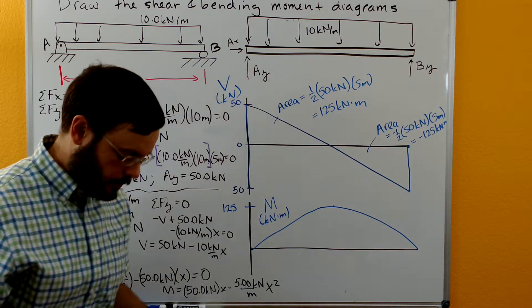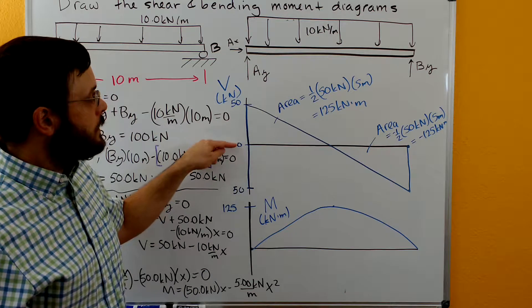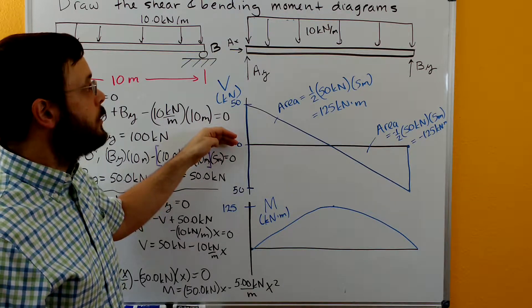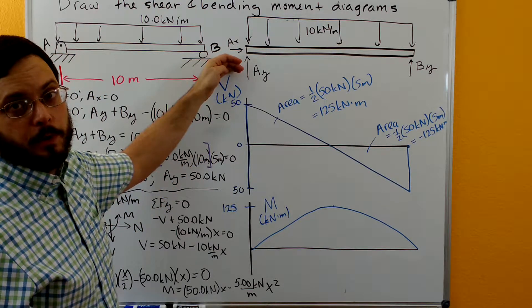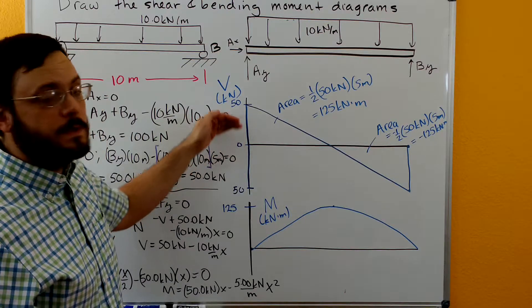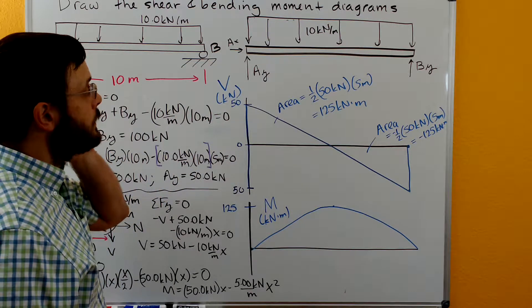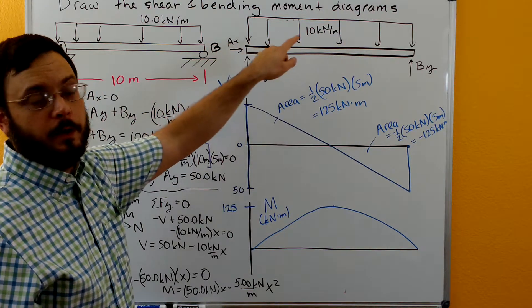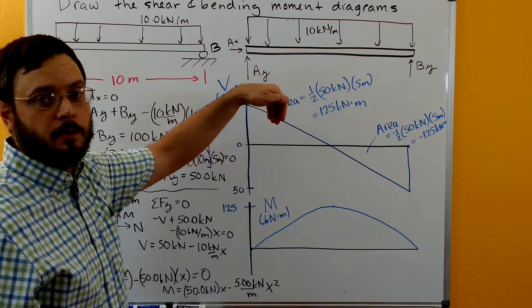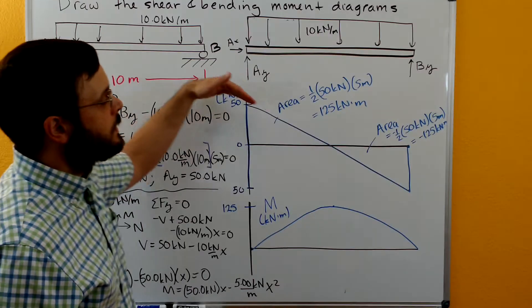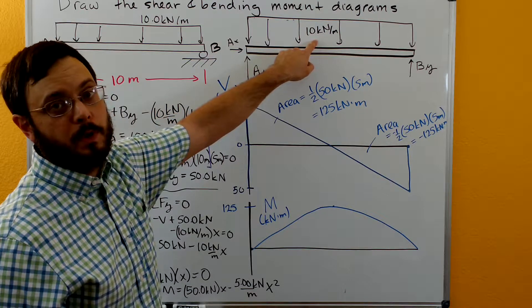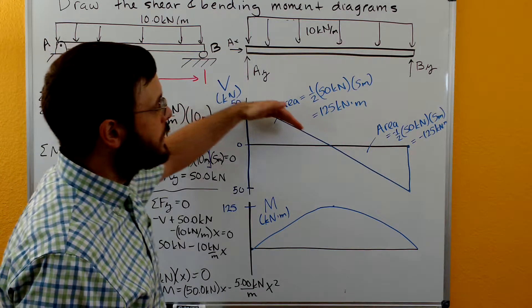Let's go ahead and draw the shear curve. We're going to start at zero and then take into account any reactions at point A. We hit AY — AY is positive 50 kN — so we go from zero to 50 kN. Then we look at our beam and see we have a distributed load of 10 kN per meter acting down, so it's negative. It's constant, so our shear is going to take a negative 10 kN per meter constant slope, giving us a straight line decrease.